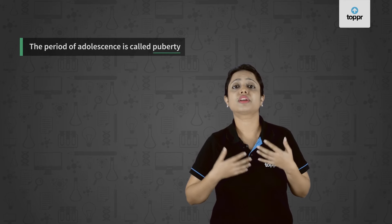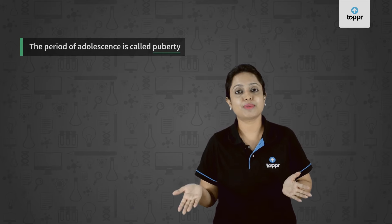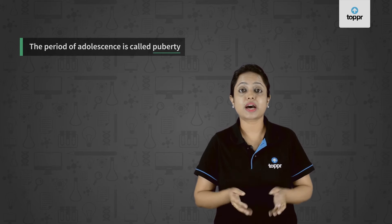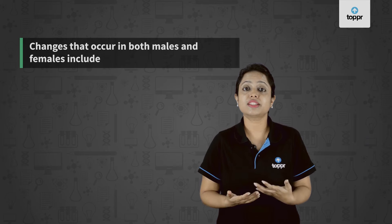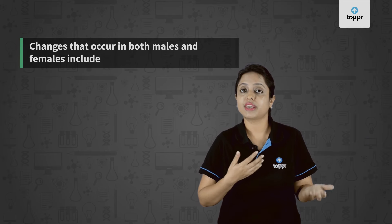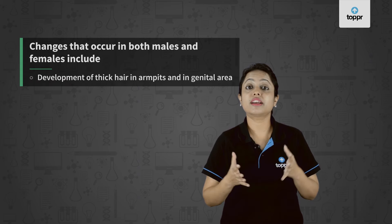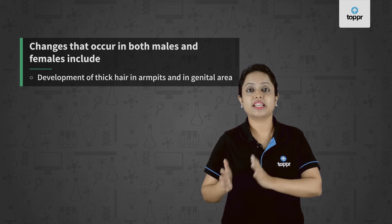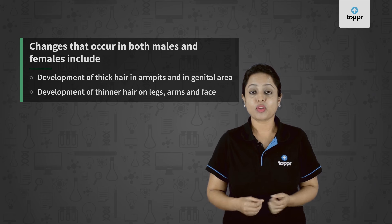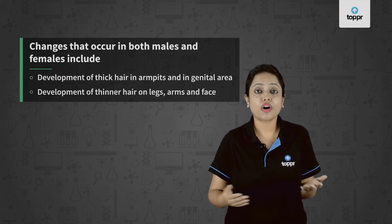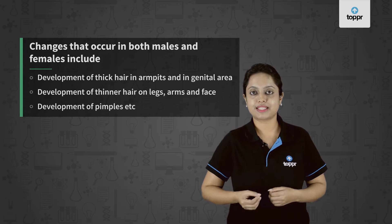Some changes that take place during puberty are common to both males and females, while some changes are peculiar to both the sexes. The changes common to both are: first, development of thicker hair in armpits and in the genital area; second, development of thinner hair on legs, arms, or even on the face; third, development of pimples.